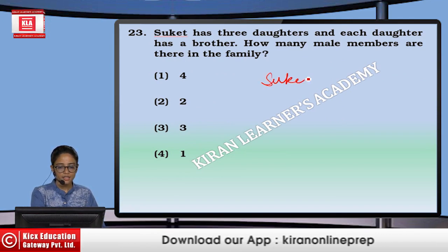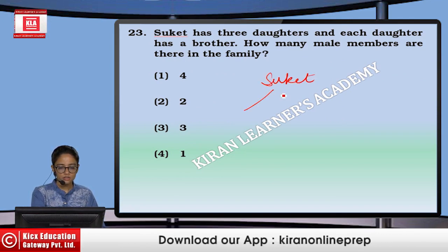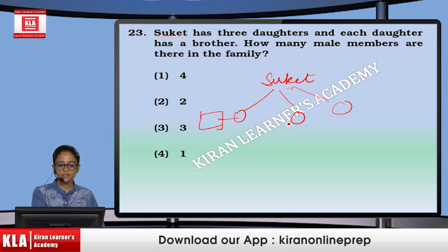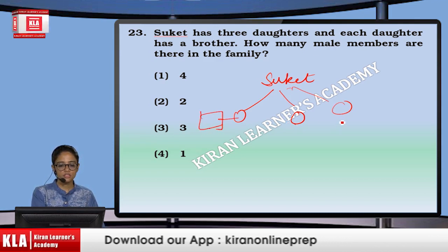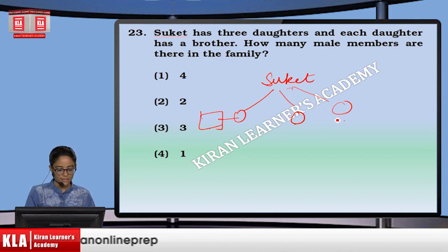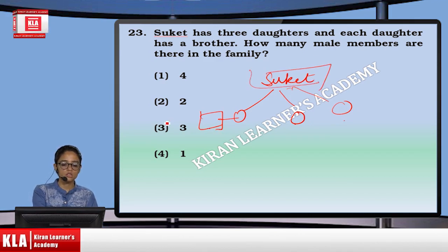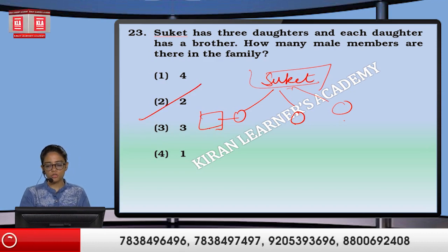Next: Suketh has three daughters, and each daughter has a brother. This brother will be the same brother for all daughters. How many male members are there in the family? One is Suketh, the other one is the brother. So there are two male members. That means option number two.